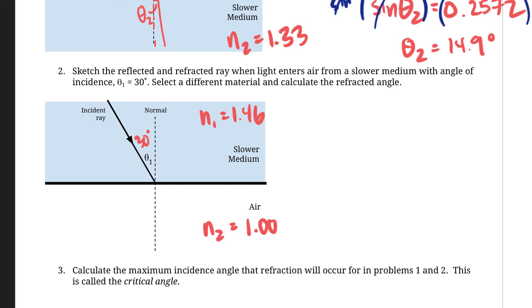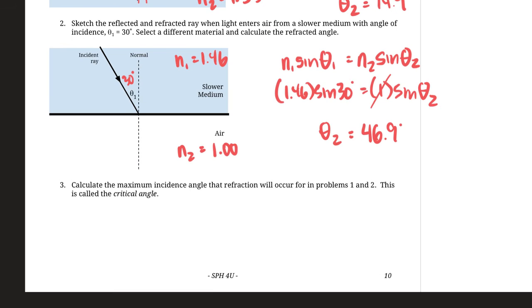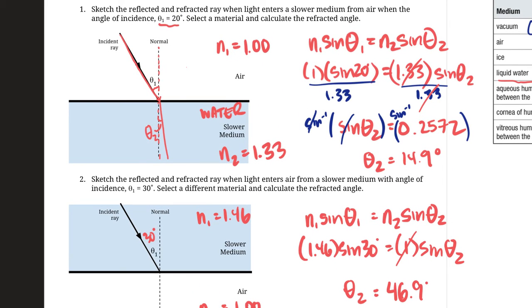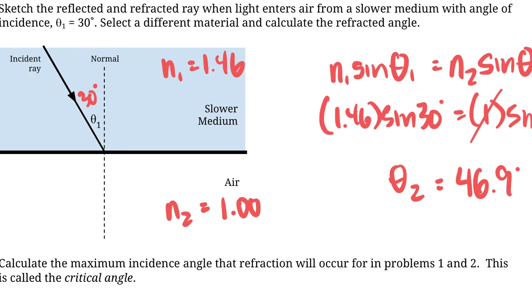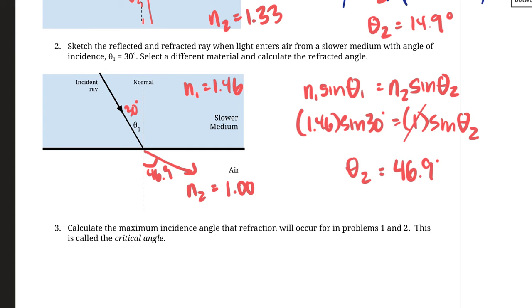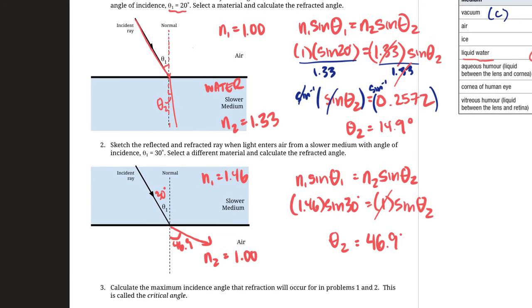The answer is 46.9 degrees, which is bigger than the 30 degree incidence angle. Unlike entering a slower medium where light bends towards the normal, when you enter a faster medium the wavelengths spread out because they're moving faster, so the distance between peaks increases. This means the light bends away from the normal. To summarize: entering a slower medium bends light towards the normal; entering a faster medium bends light away from the normal.